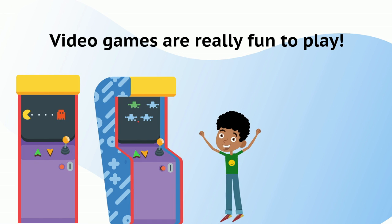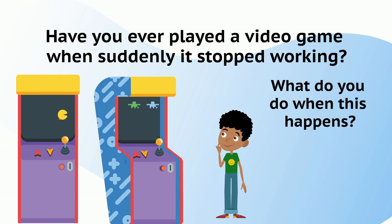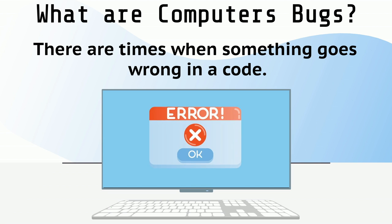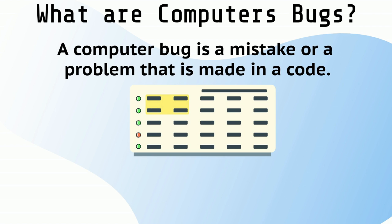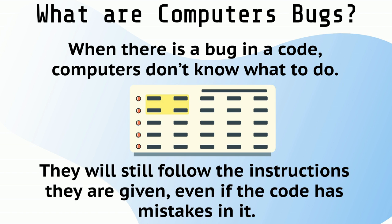Video games are really fun to play. Have you ever played a video game when suddenly it stopped working? What do you do when this happens? How do you fix it? There are times when something goes wrong in a code. These mistakes are called bugs — not that kind of bug. A computer bug is a mistake or a problem that is made in a code. When there is a bug in a code, computers don't know what to do. They will still follow the instructions they are given, even if the code has mistakes in it.